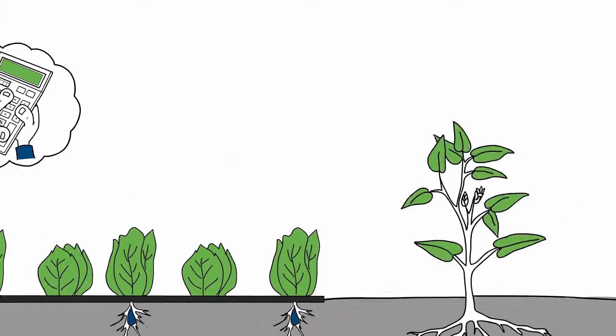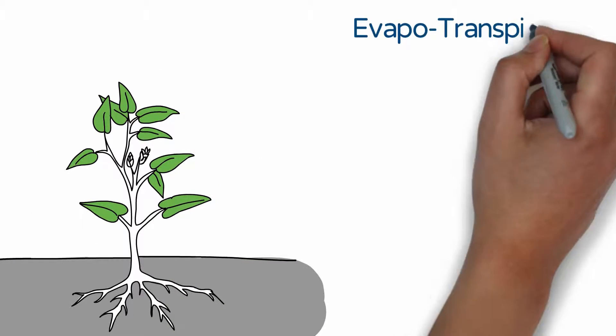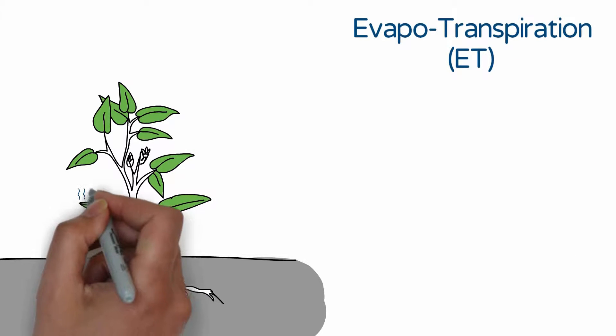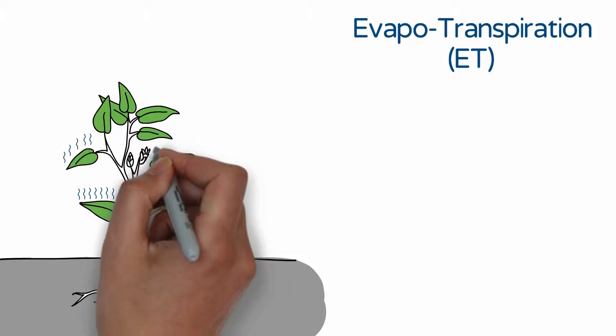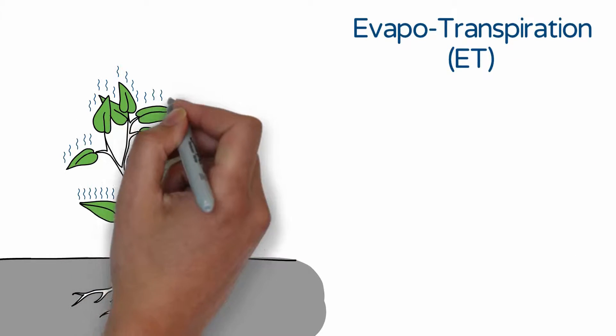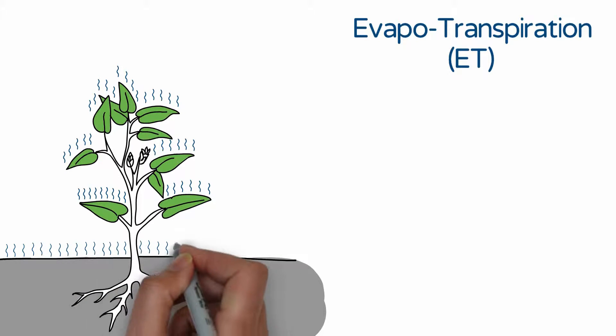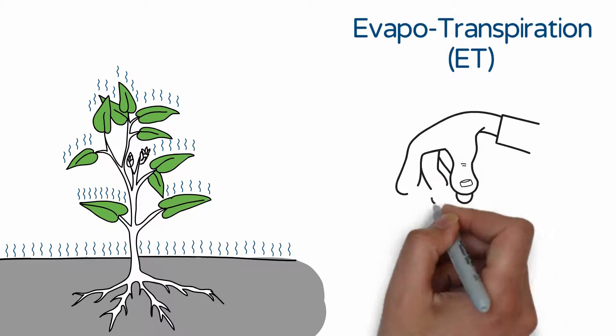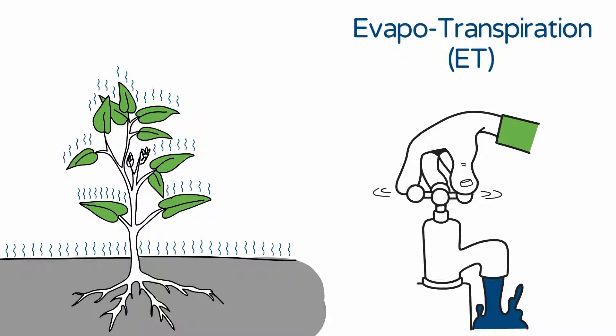The water consumption of a field is called evapotranspiration, or ET. It is a value based on the amount of water that the plants consume by transpiration along with evaporation from the soil. Altogether, it represents the field's water consumption.